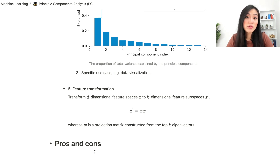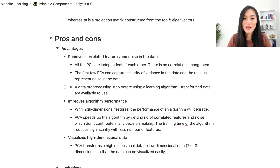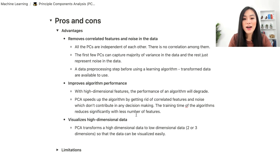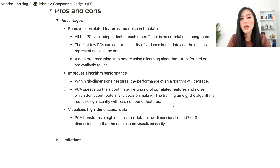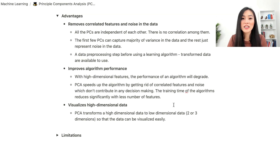The pros of PCA: first, it removes correlated features and noise. All principal components are independent of each other. The first few principal components capture the majority of variance while the rest represent noise, so selecting the first few removes noise — making PCA a useful pre-processing step. Second, PCA improves algorithm performance: for high-dimensional input, PCA speeds up algorithms by removing correlated features and noise, significantly reducing training time.